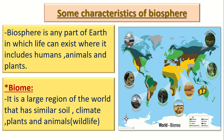The biosphere consists of many places called biomes. A biome is a large region of the world that has similar soil, similar climate, similar plants, and similar animals. For example, the desert is a biome — it has similar soil, climate, plants, and animals throughout. Any large place with the same weather, plants, animals, and soil is called a biome.